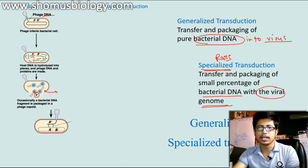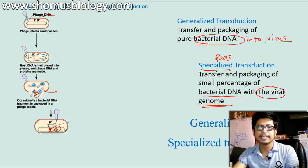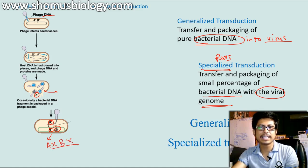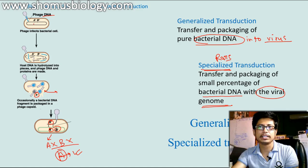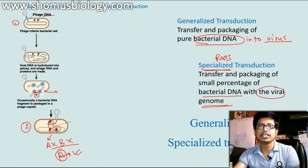When that phage infects another bacteria that has neither the A nor B gene present, the A plus gene is present in the phage head. Once the phage injects its DNA into the host target bacterial cell, the A plus gene is donated to the target cell. Now, earlier this bacterial cell could not produce either the product A or B, but now as they receive this A plus gene from the phage, they can produce products coded by the A gene. That is how genetic components are shared from bacteria number one to bacteria number two — this is generalized transduction.